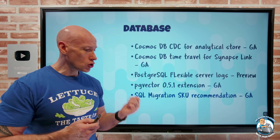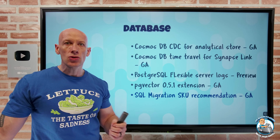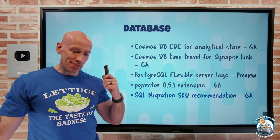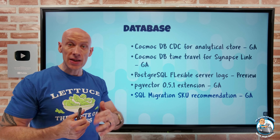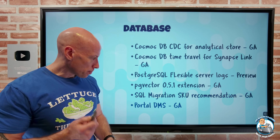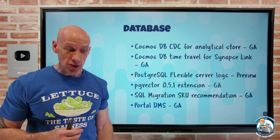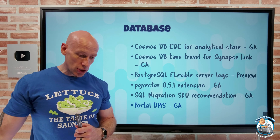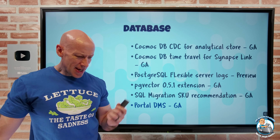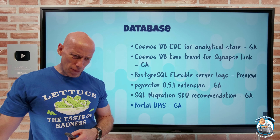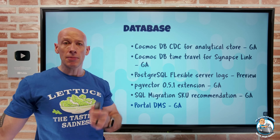SQL migration now has SKU recommendations via the Azure Data Studio extension. It will recommend a right-sized Azure SQL Managed Instance or SQL Server running in an IaaS virtual machine based on observed performance and utilization, and will also recommend premium SSD V2 disks if they're the best match. The portal-based version of the database migration service is now GA, so from the portal you can create migration jobs, view data, and manage them. Additionally, Azure Database Migration Service added support for schema migration, enabling migration of schema objects, schemas, tables, and stored procedures as part of the data migration.